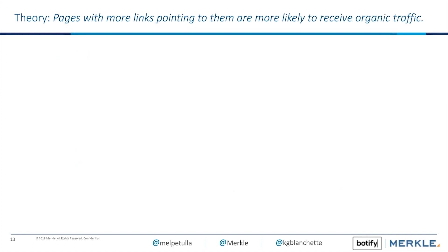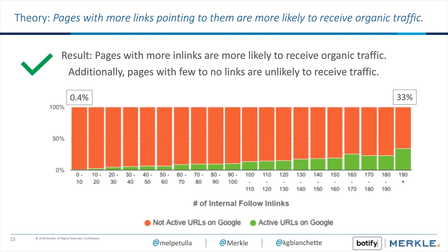For our third theory, similar to the last one, we wanted to look at the impact that the size of the internal link profile has on a page's ability to get traffic — not just its average ranking position. The results were fairly conclusive: pages with a larger internal link profile are significantly more likely to receive traffic in a 30-day period. Towards the right side of this chart, pages with 190 or more links pointing to them have a 33% active pages ratio. On the other side, pages with between 0 and 10 internal links pointing to them show only about 0.4% receiving visits in a 30-day period — a really strong correlation. So not only does having more internal links lead to more visits, but it also leads to better ranking.